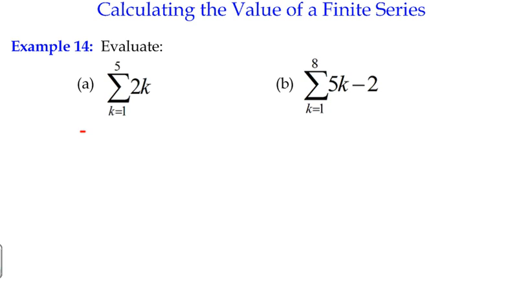So what we need to do is isolate sigma k, not 2k. In actual fact, the answer to 2k is just going to be twice the answer to sigma k from 1 to 5. So if there's a multiple in front of the letter k, we can bring that out as a common factor. And we're going to use the formula for sigma k, which happens to be n times n plus 1 over 2.